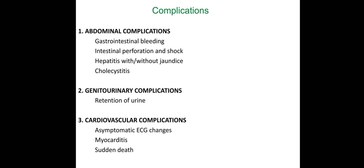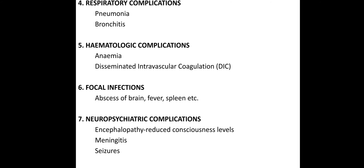What are the complications? Abdominal complications include GI bleeding, intestinal perforation, shock, hepatitis with or without jaundice, and cholecystitis. In genitourinary complications, there is retention of urine. Cardiovascular complications include asymptomatic ECG changes, myocarditis, and sudden death may occur if untreated. Respiratory complications include pneumonia and bronchitis. Hematological complications include anemia and disseminated intravascular coagulation (DIC).